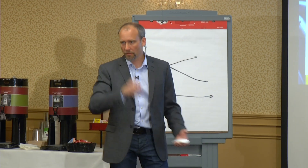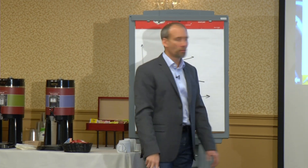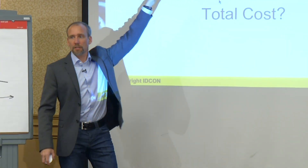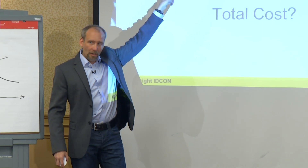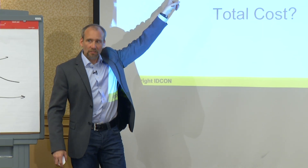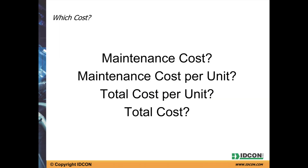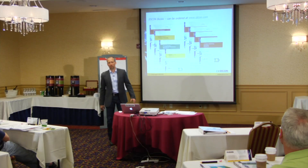Which cost is the most important here? Which one do we target? Is the maintenance cost interesting? You hear that a lot from your managers — your job is to drive down the maintenance cost per ton. But is that really relevant? What if I have the highest maintenance cost in the industry ever seen, but I have the lowest total cost?